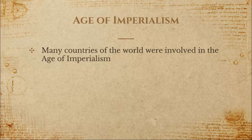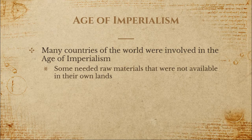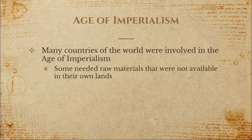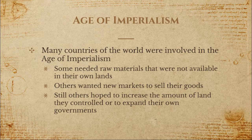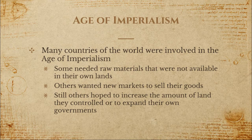There were many countries involved in the age of imperialism. Some needed raw materials that were not available in their own lands, so they would take control of lands that had these materials. Other countries wanted new markets to sell their goods in, and taking over new lands meant many new consumers. Other imperialist countries simply wanted to increase the amount of land they controlled or expand their own government — the more land controlled, the more power they had. So many countries aimed to gain new colonies for their empire.